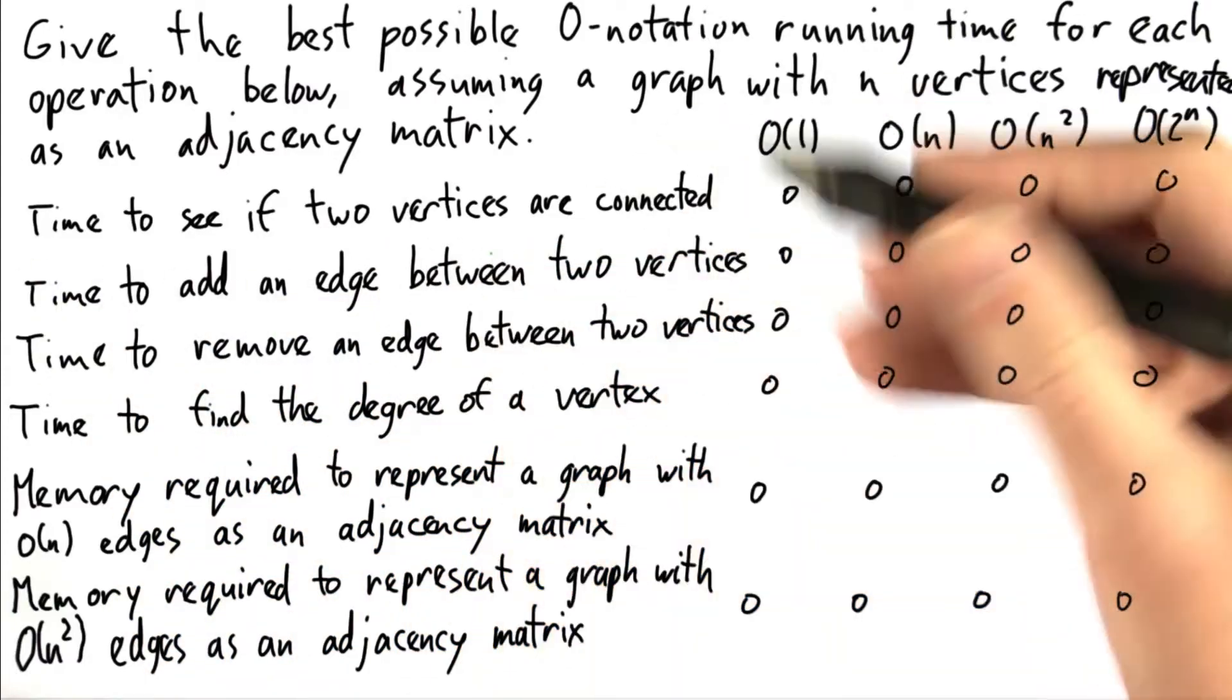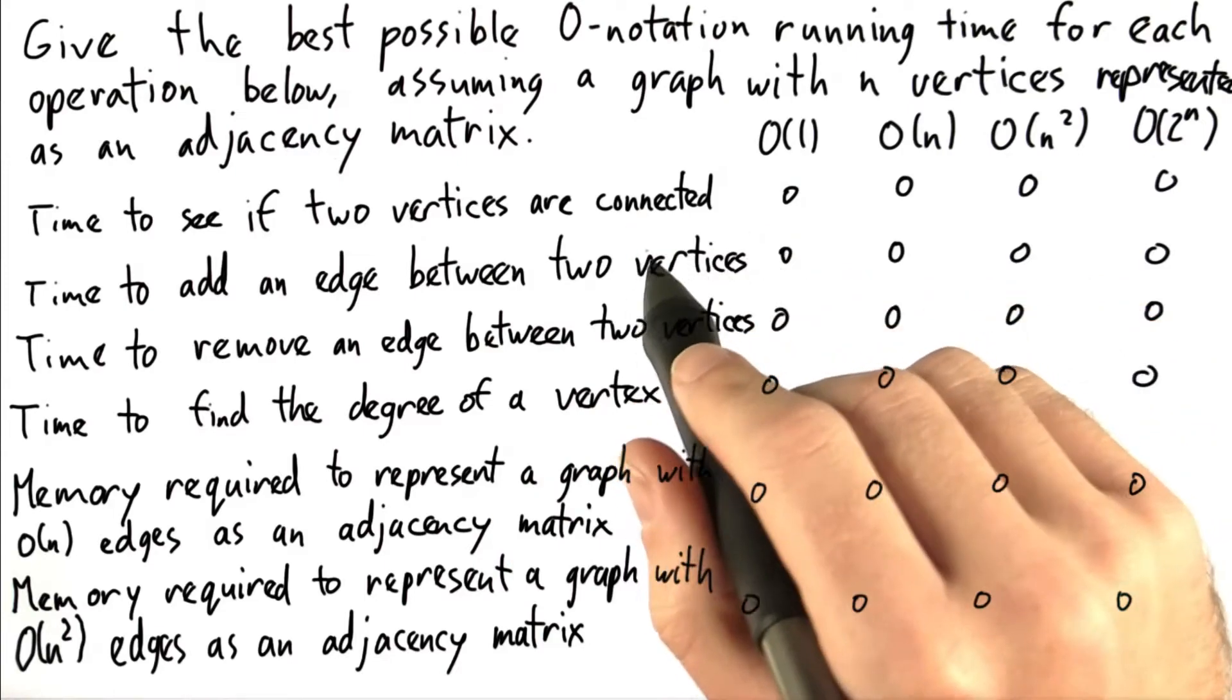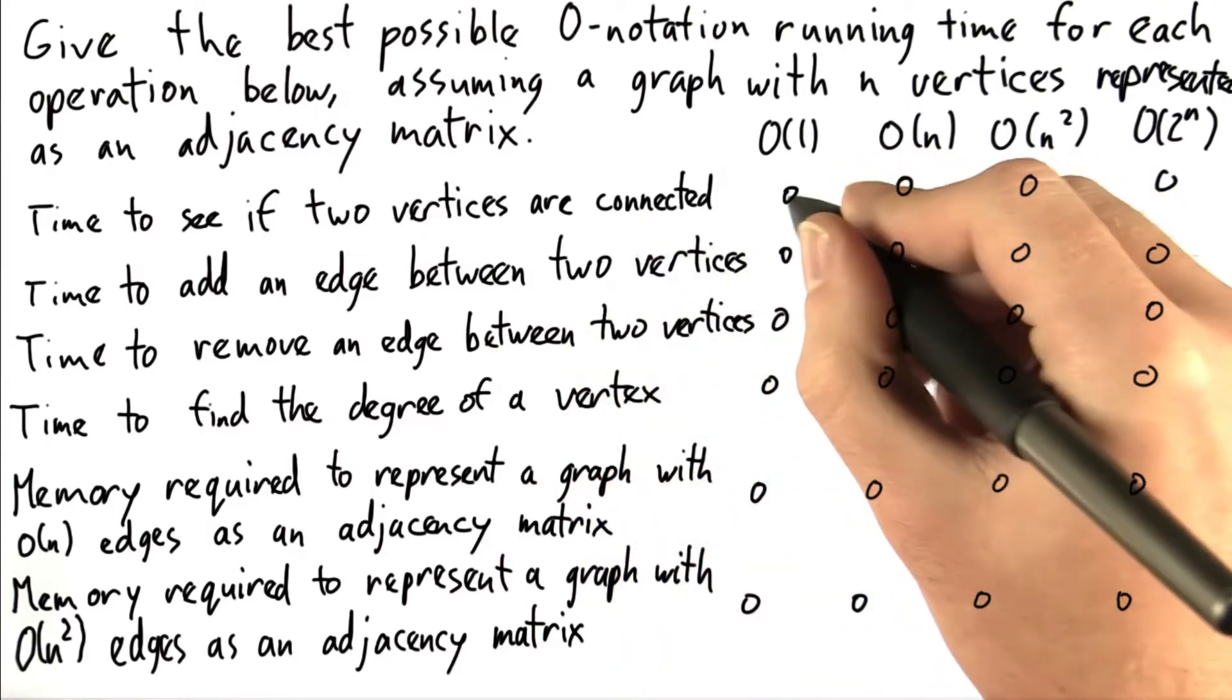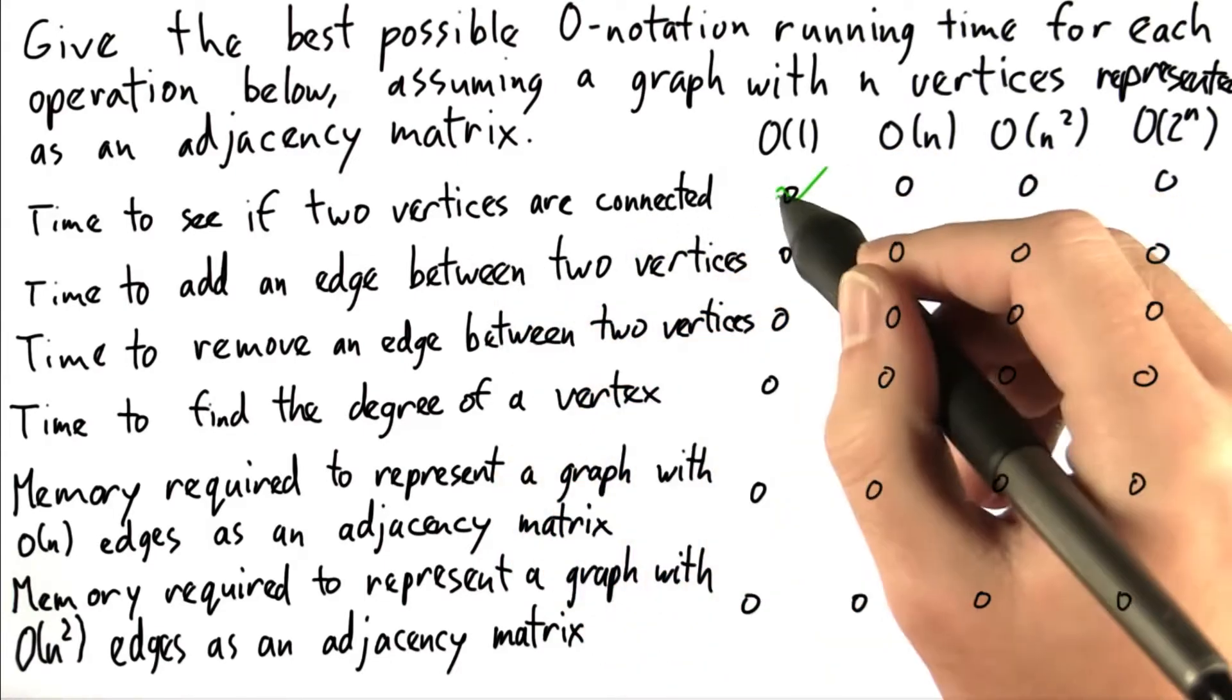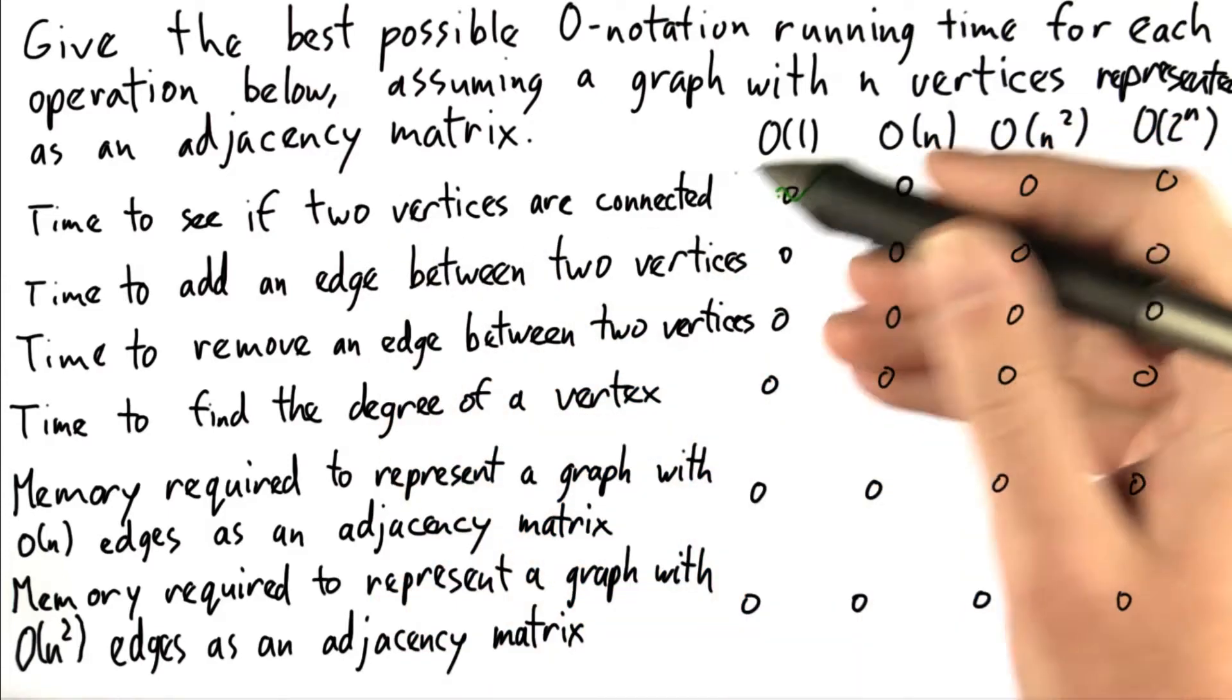So the time to see if two given vertices are connected—if we can access every element of the adjacency matrix in constant time, then we can just check that given element in the matrix in constant time.